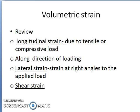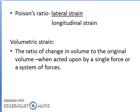Longitudinal strain is generally caused due to the tensile or the compressive load and it takes place along the direction of loading. Lateral strain is the strain which takes place at right angles to the applied load. Shear strain is caused due to the shear force acting on a material. Poisson's ratio is defined as the ratio between the lateral strain and the longitudinal strain — it describes how much the dimensions shrink when another dimension is expanding, and vice versa.